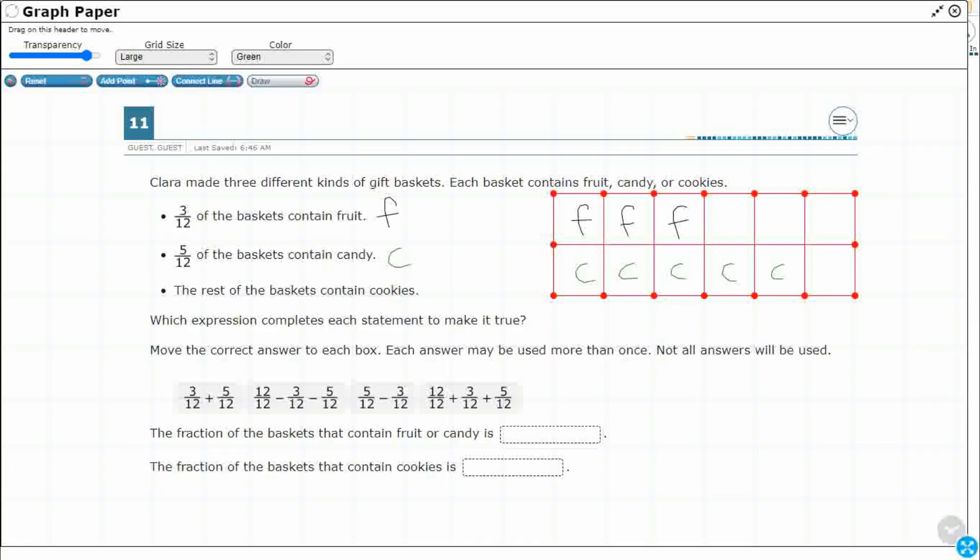So it looks like I've got the rest containing cookies. The rest - you notice they don't tell you what that is, but we can probably figure out what that is really quick. Cookies. I've already used C for candy, so I'm going to just put CK for cookies. That's just anything that's left, the rest. So what do I have? I've got one, two, three, four. So look at that, four 12ths.